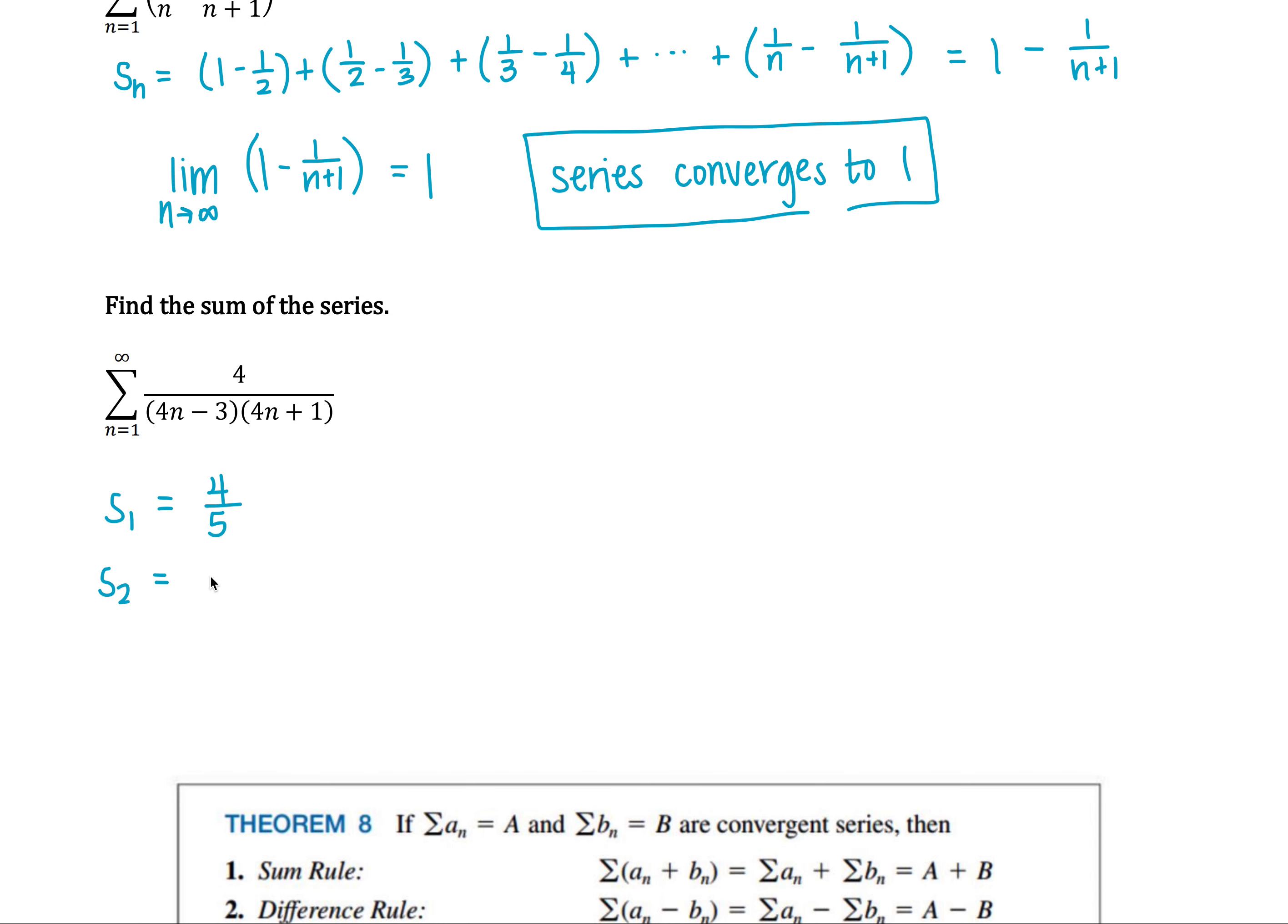The second one would be 4 fifths plus 4 over 45. If you add those together and then reduce, you end up with 8 ninths.